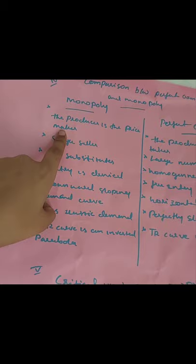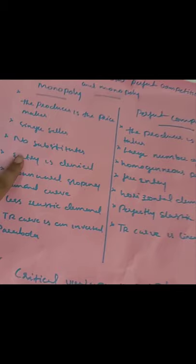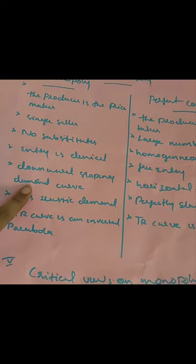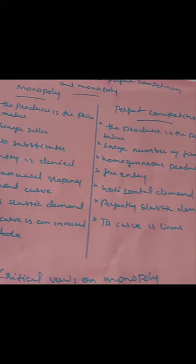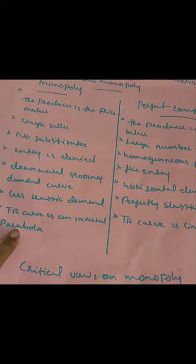Comparing monopoly with perfect competition: in monopoly the producer is the price maker, while in perfect competition it is a price taker. Monopoly has a single seller; perfect competition has a large number of firms. There are no substitutes in monopoly versus homogeneous products in perfect competition. Entry is restricted in monopoly versus free entry in perfect competition. Monopoly has a downward sloping demand curve; perfect competition has a horizontal demand curve. Monopoly has less elastic demand versus perfectly elastic demand, and the TR curve is an inverted U-shape versus a linear TR curve in perfect competition.